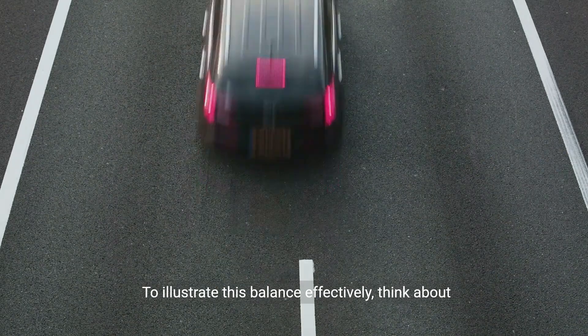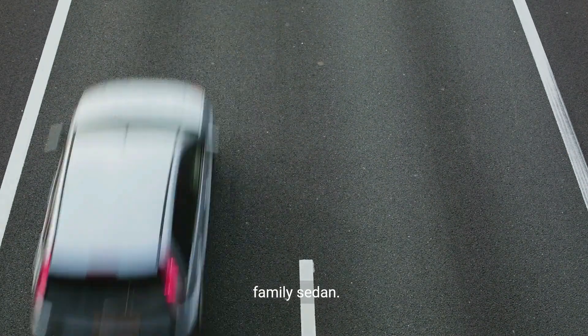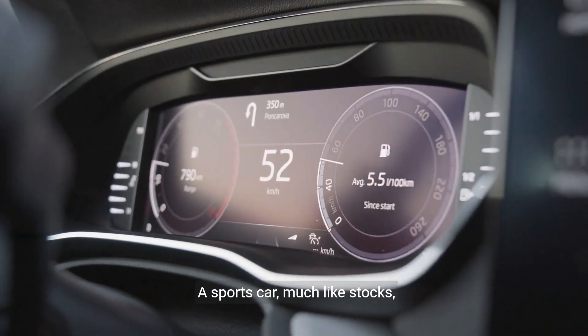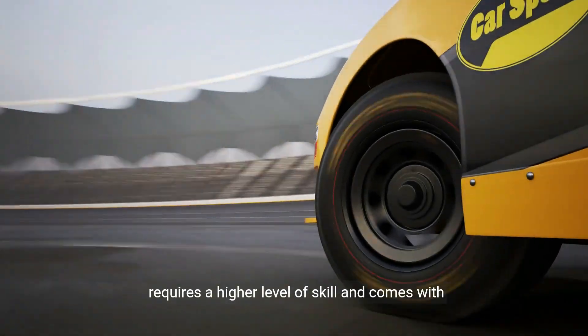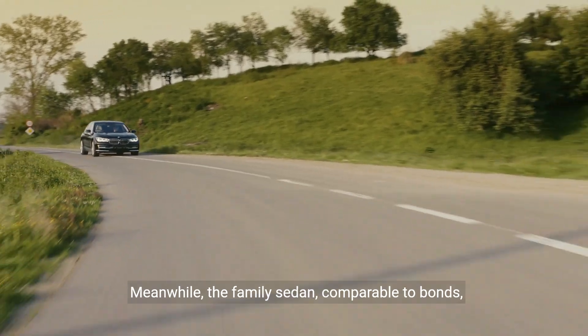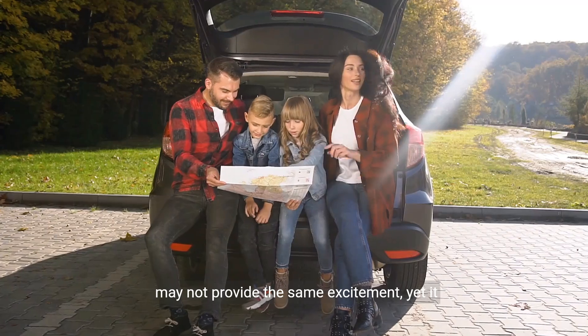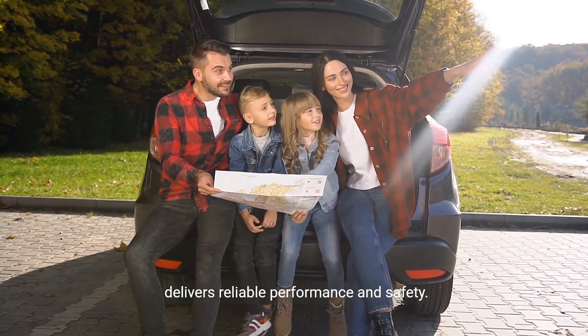To illustrate this balance effectively, think about the differences in driving a sports car versus a family sedan. A sports car, much like stocks, offers the thrill of speed and performance, but requires a higher level of skill and comes with greater risk of accidents. Meanwhile, the family sedan, comparable to bonds, may not provide the same excitement, yet it delivers reliable performance and safety.